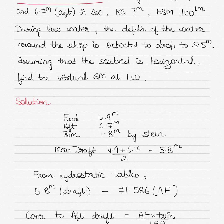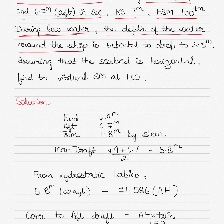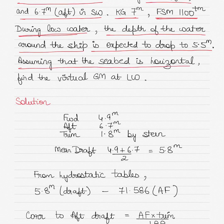There is a vessel which is at anchor, and the forward and aft drafts are given in sea water. The KG of the vessel and the free surface moment are also given. During low water, the depth of the water around the ship is expected to drop to 5.5 meters, assuming the seabed is absolutely horizontal. You have to find the virtual GM at low water.